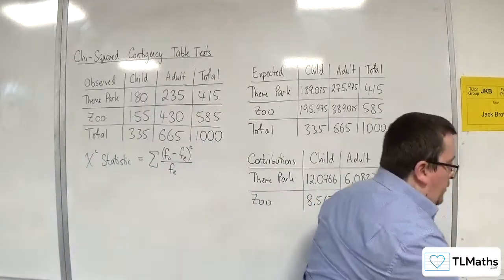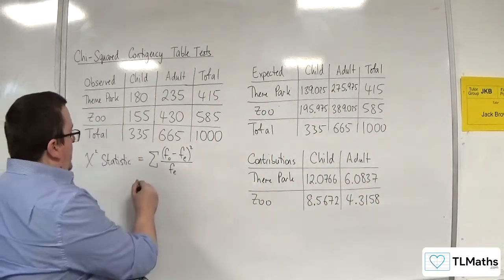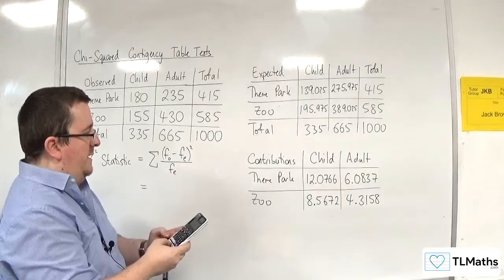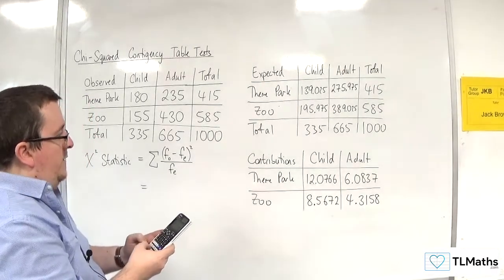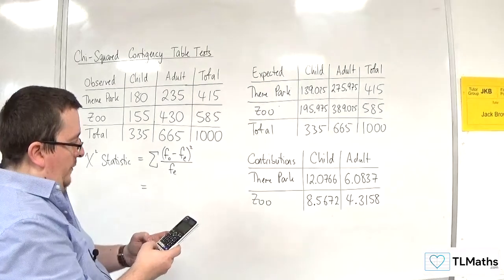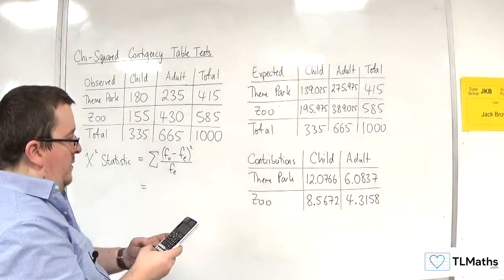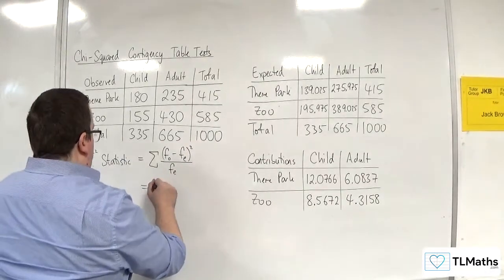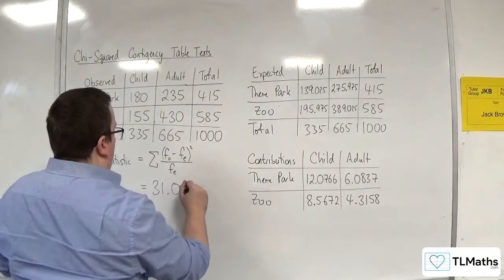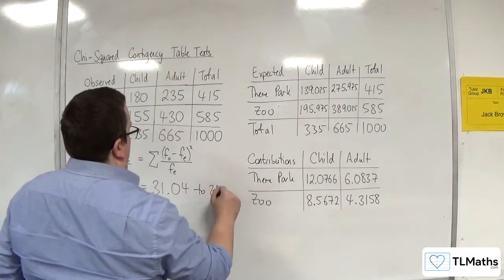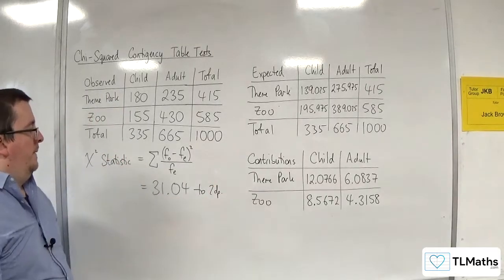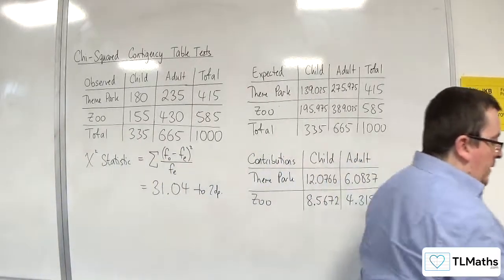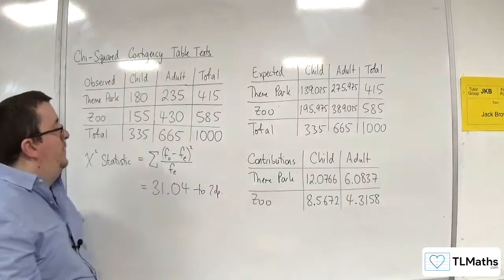And what I'm going to do is I'm going to add them all together to get my chi-squared statistic. So 12.0766 plus 6.0837 plus 8.5672 plus 4.3158, and I'm getting 31.04 to two decimal places. So that is how we calculate the chi-squared statistic from the original observed table.